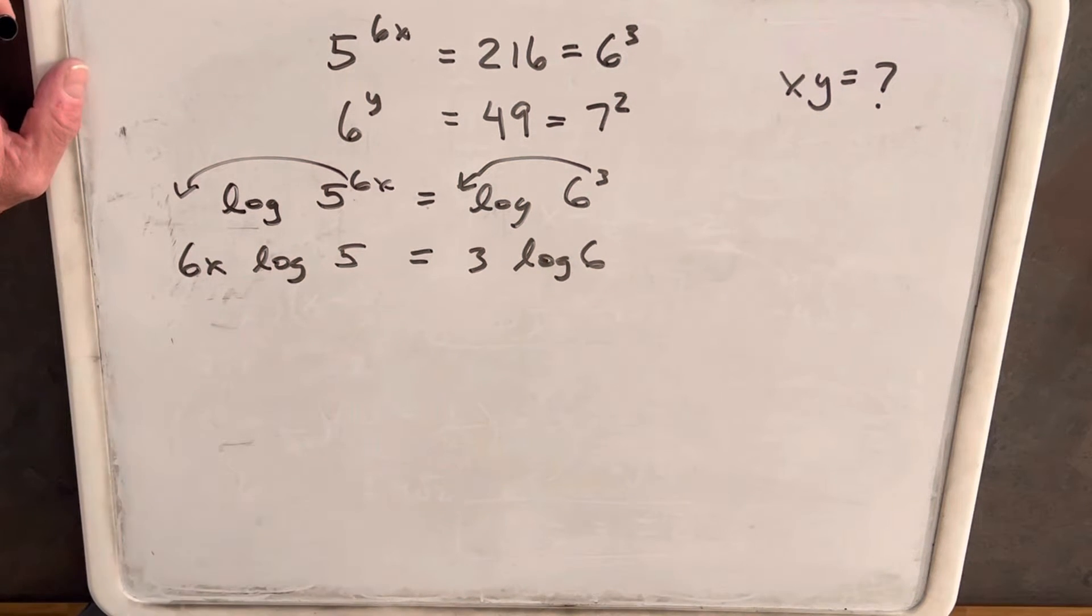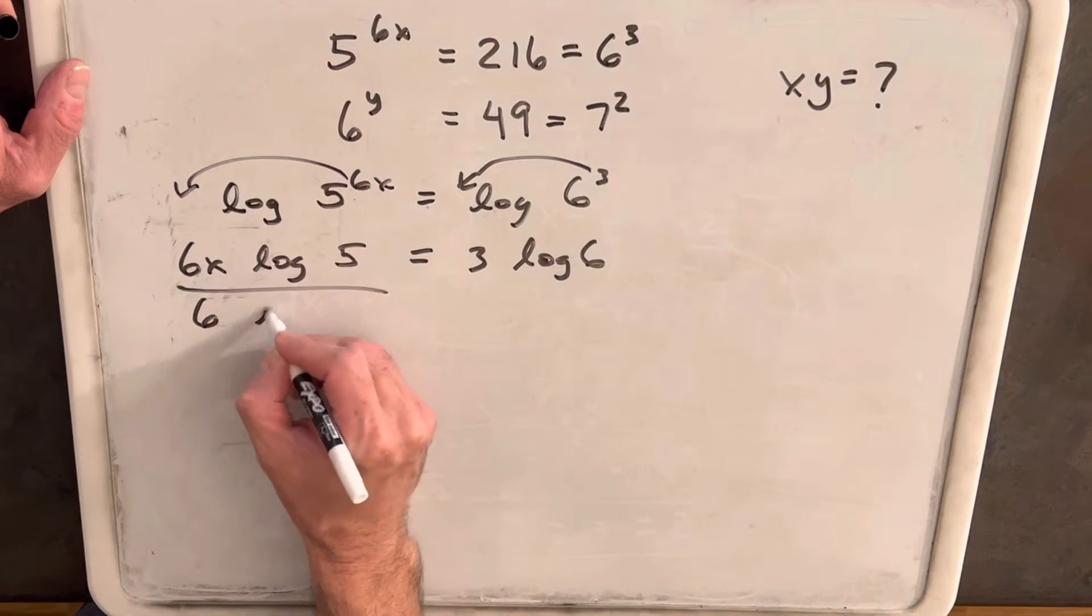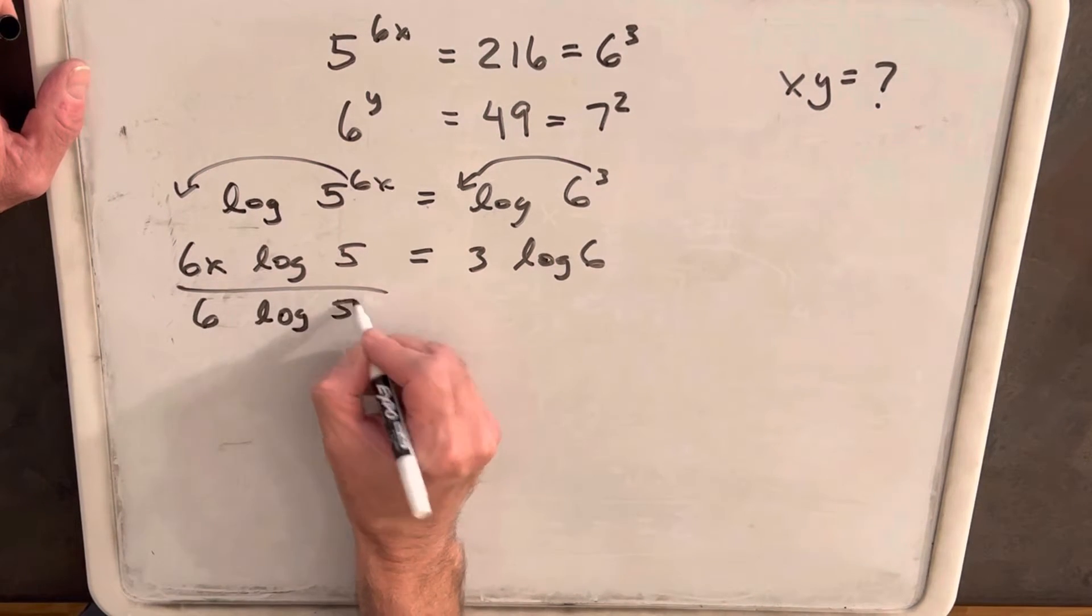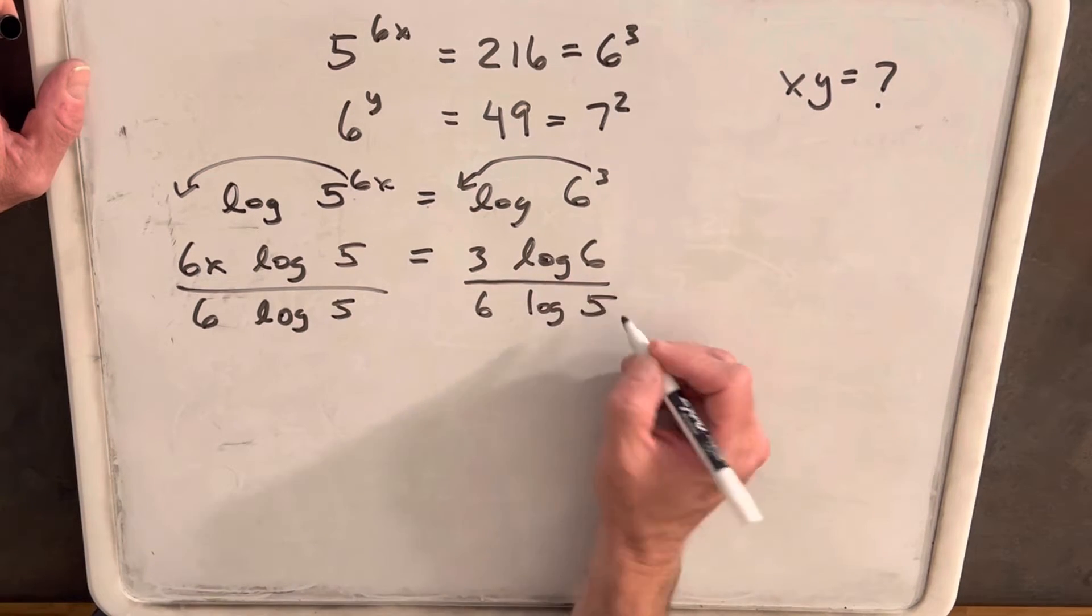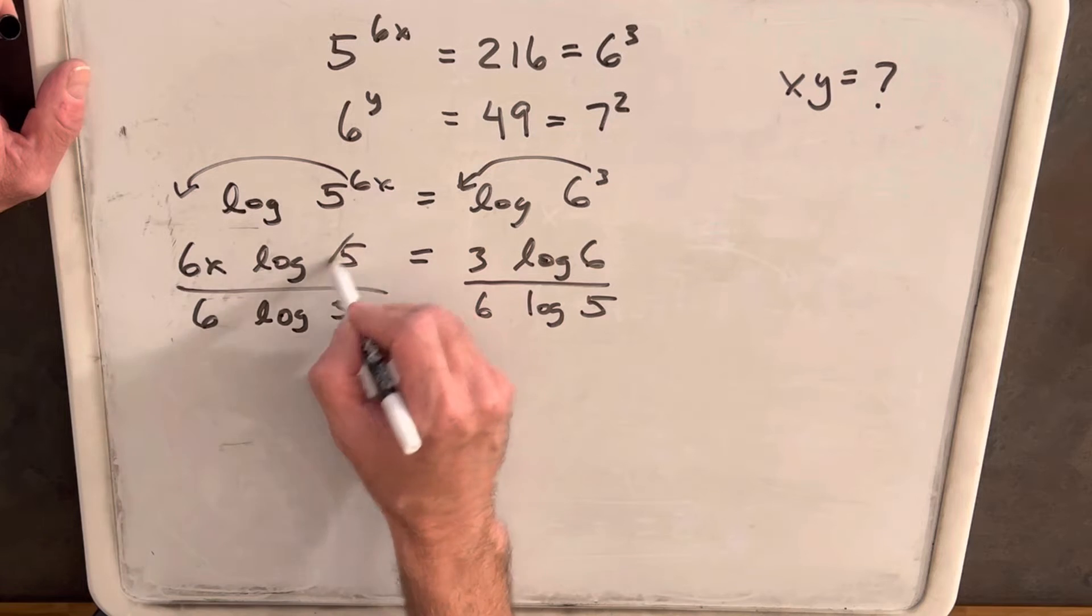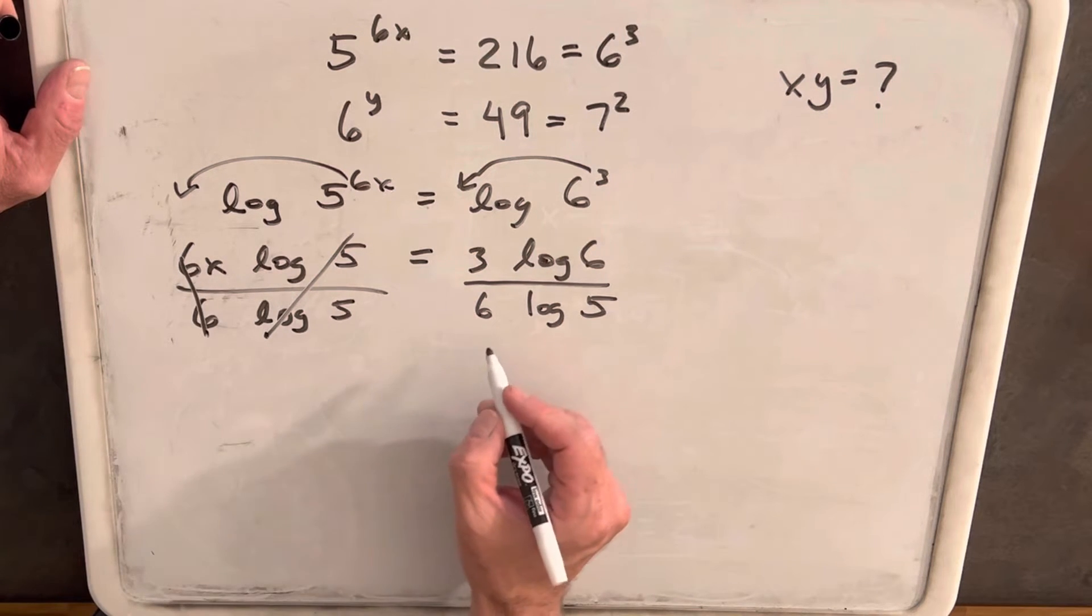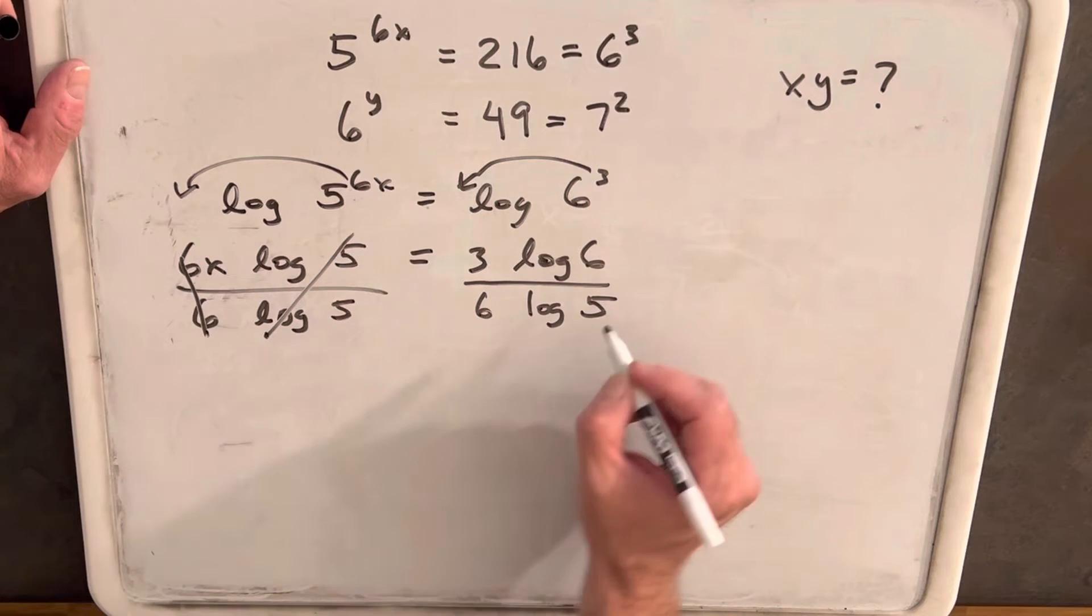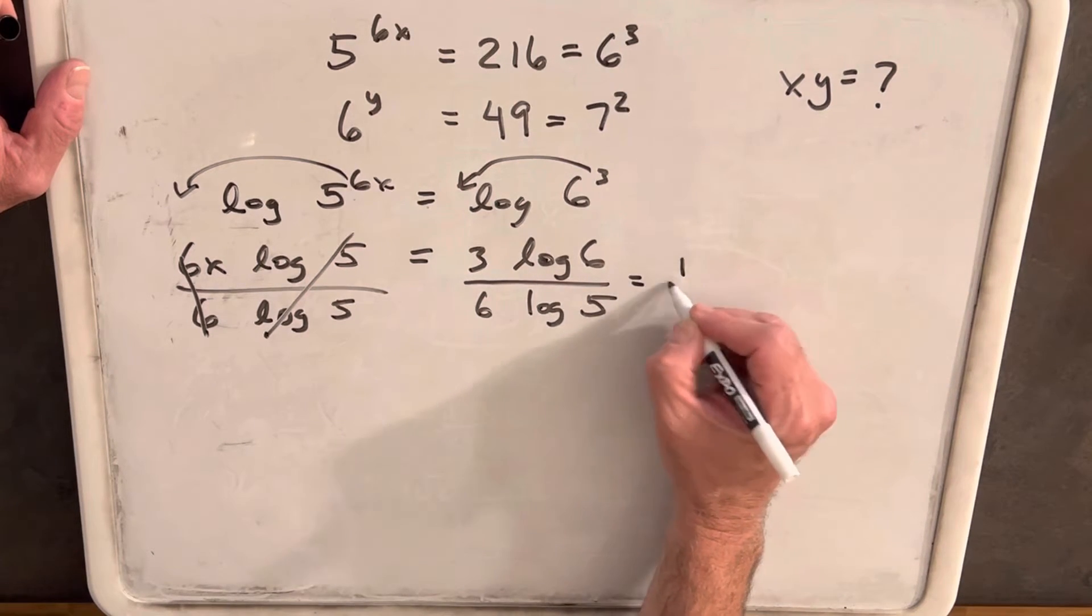Then what do I want to do here? Let's just divide by 6 log 5 on both sides. Okay, so then that cancels and that cancels. And actually, 3 over 6 here simplifies to 1 half.